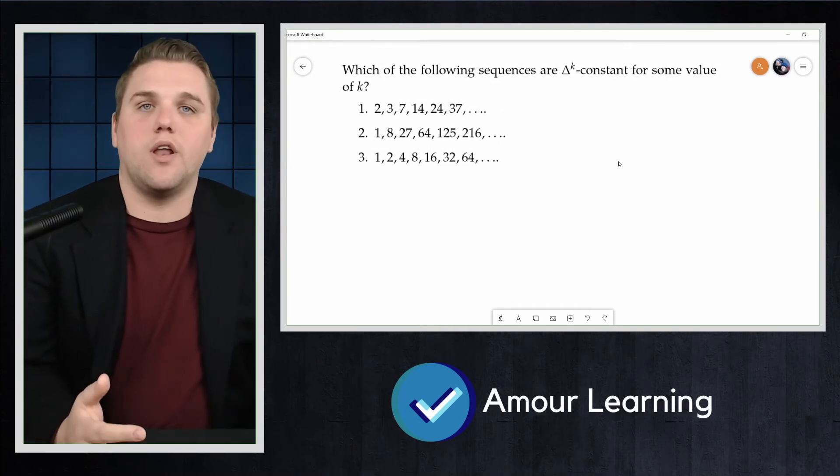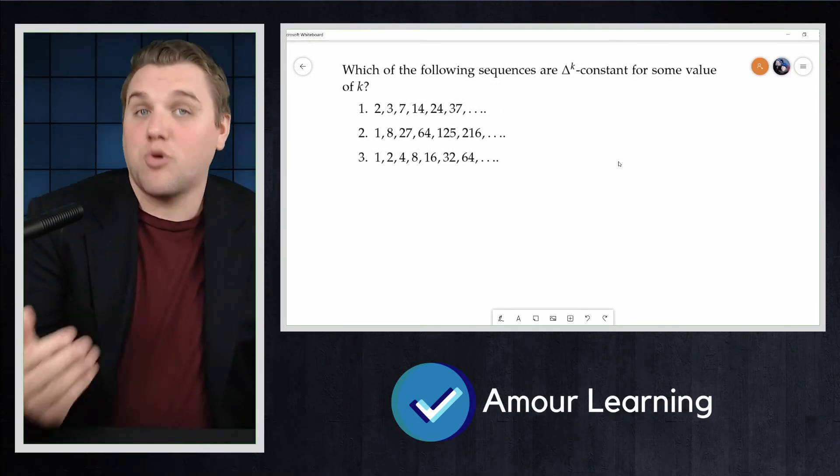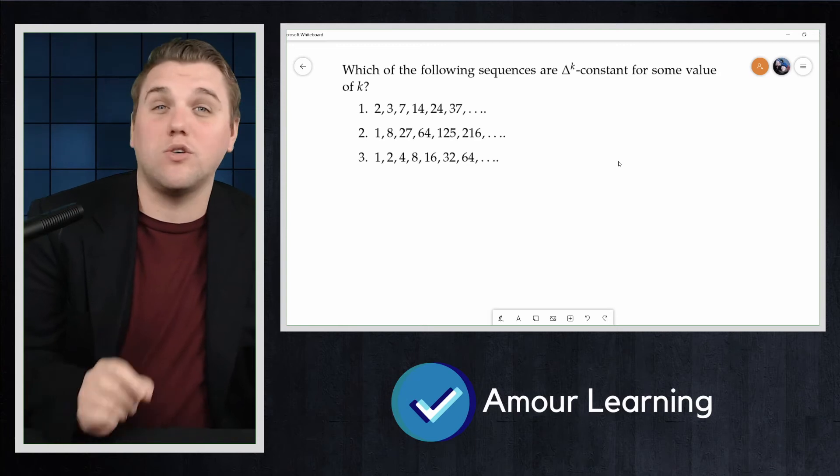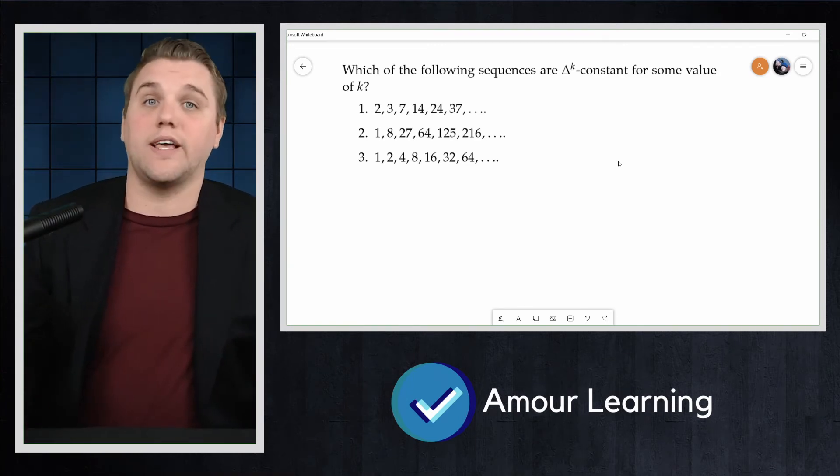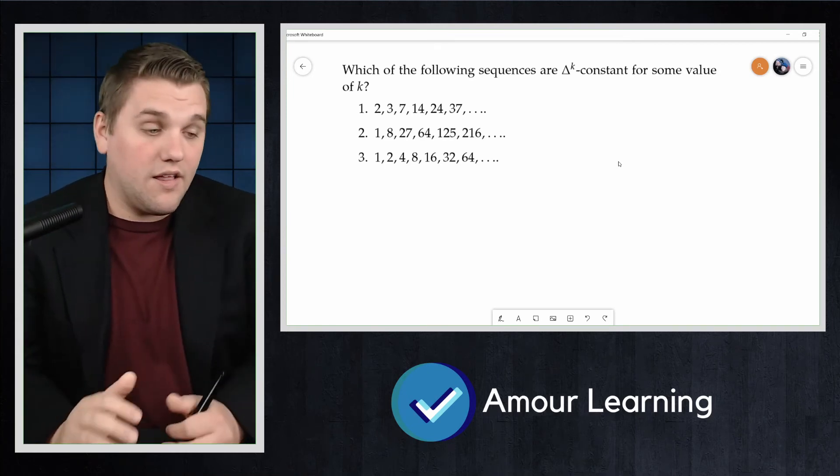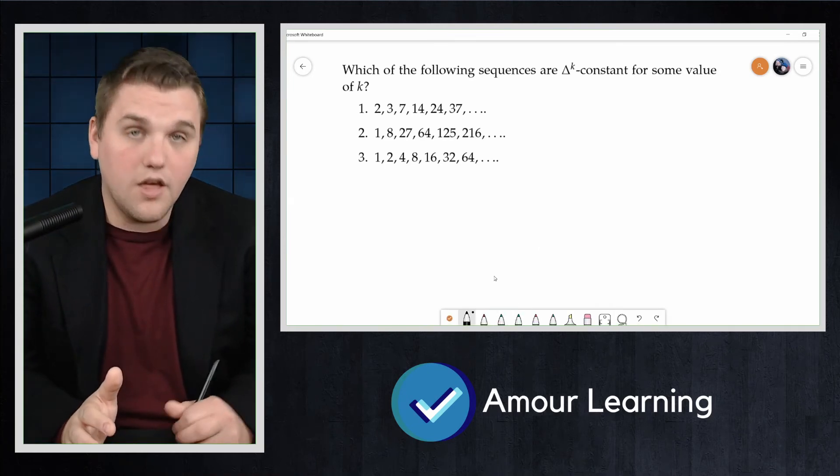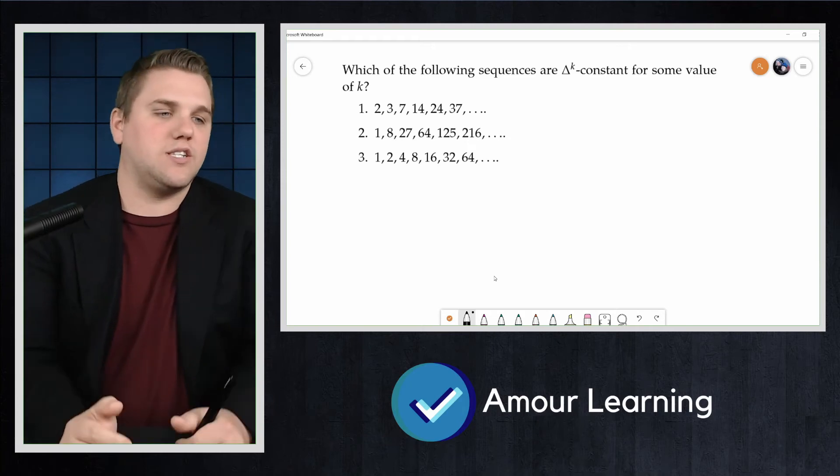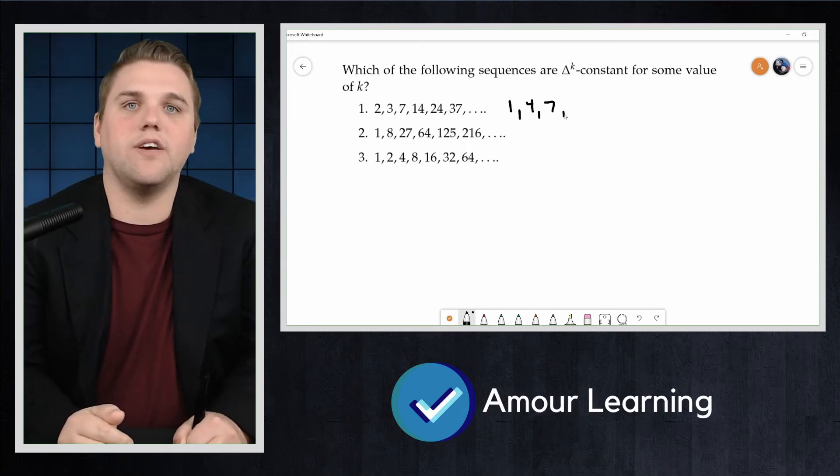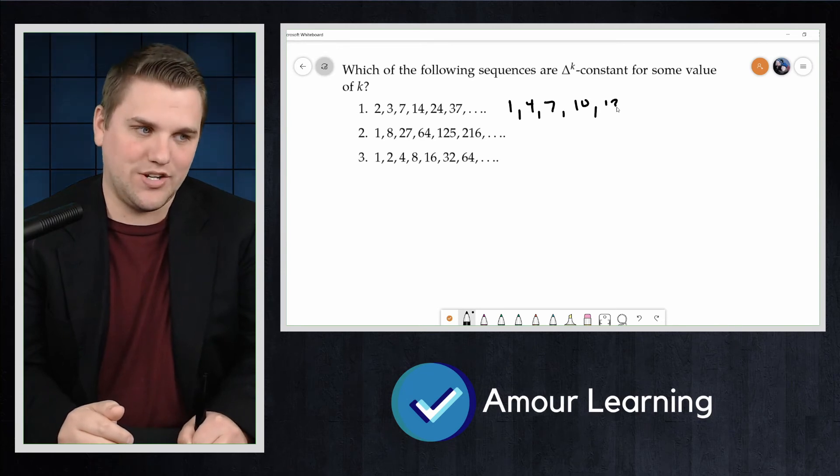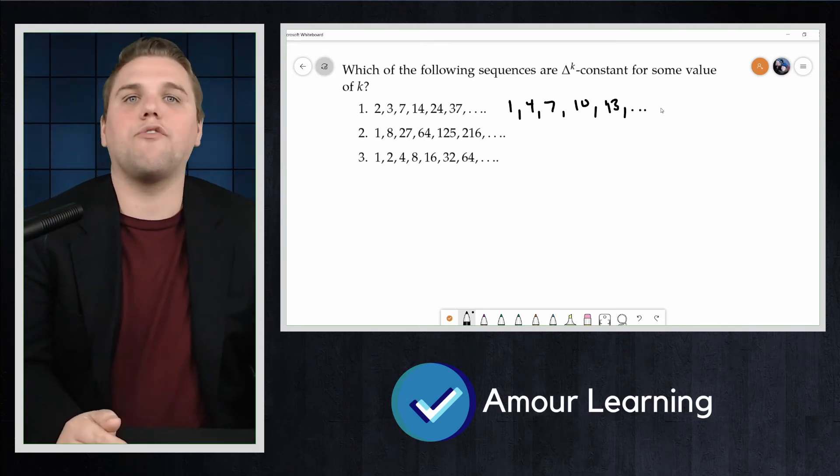So for the first one, this is the sequence from a previous video in which we found a closed formula by recognizing the sequence as a sequence of partial sums of an arithmetic sequence. Indeed, the sequence of first differences is 1, 4, 7, 10, 13, and so forth.